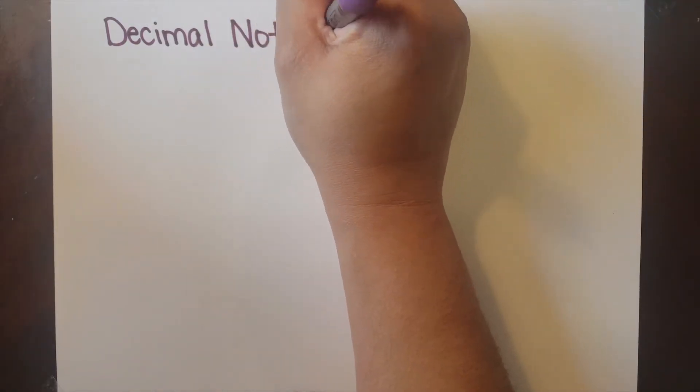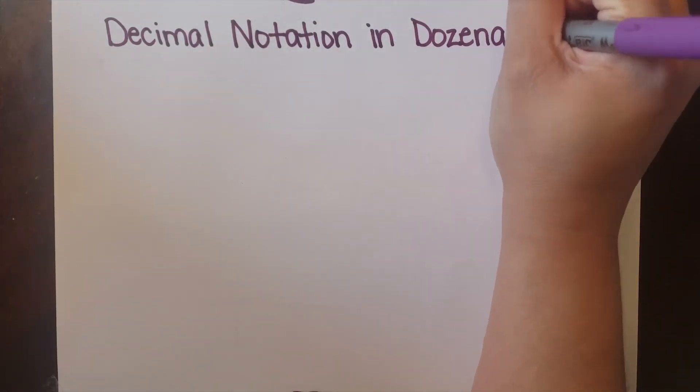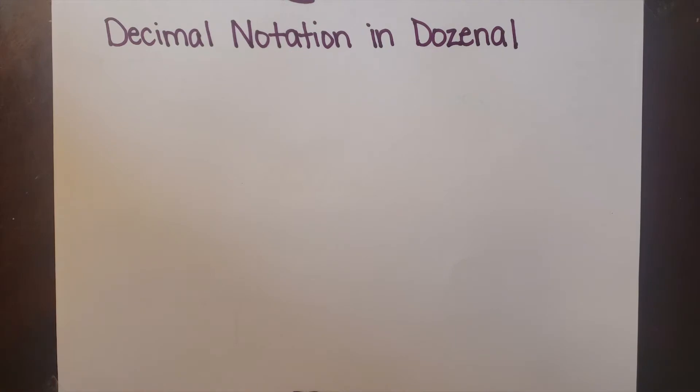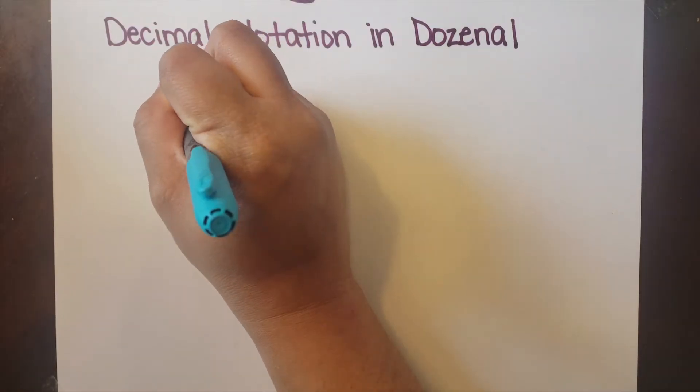I made this video to explain how to divide and use decimal notation in dozenal. Starting with the decimal notation, it's very similar to just regular naming. For example: